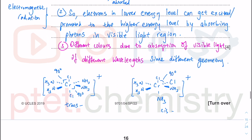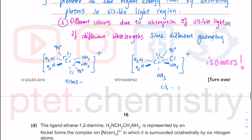To be clear: you cannot say the different colors are due to different ligands, because these are geometric isomers with identical ligands. That is the trick in this question.